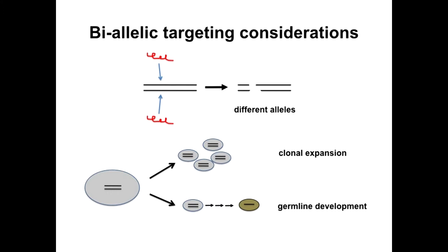One last point: CRISPR often gives you biallelic targeting. When you think about that, you've got two alleles for a particular gene that you're targeting in a cell. You might induce different size breaks and deletions if you're just trying to knock out — it doesn't matter how much you've deleted, it's knocked out. In other cases though, the difference between those two alleles might be of interest, particularly if you're trying to get something in by homologous recombination.